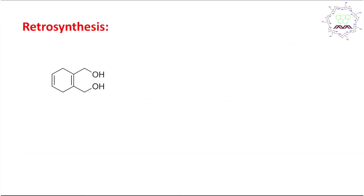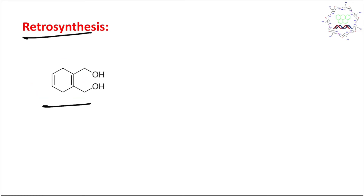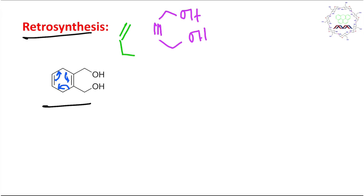Before ending, one interesting explanation: the retrosynthesis of this molecule. Whenever you see any six-membered compound with a double bond, think about a retro-Diels-Alder. Working backwards, it will come apart into a diene and a dienophile.